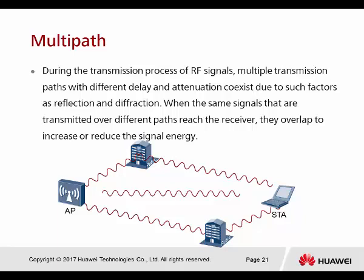Next is multi-path. During the transmission of radio frequency signals, multiple transmission paths with different delays and attenuation coincide due to factors such as reflection and diffraction. For example, a user connected to a public AP outdoors may experience interference from surrounding buildings that also provide Wi-Fi — even non-free Wi-Fi signals can still cause interference.